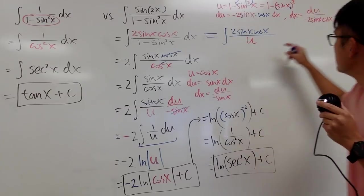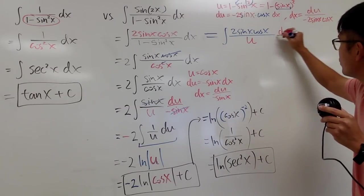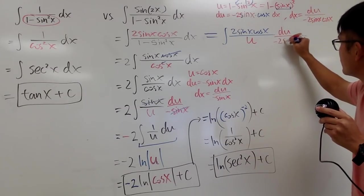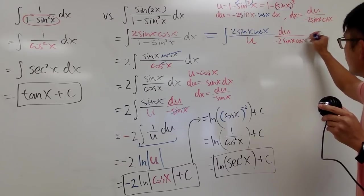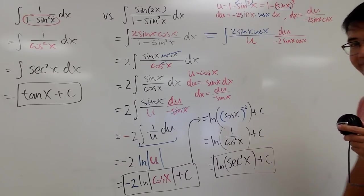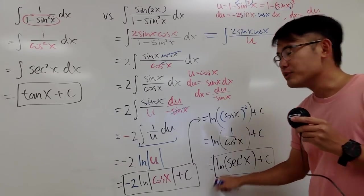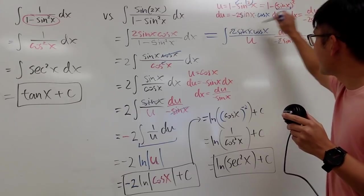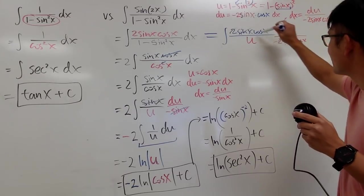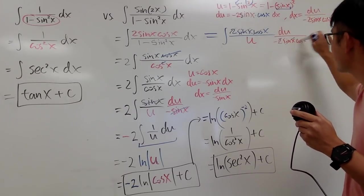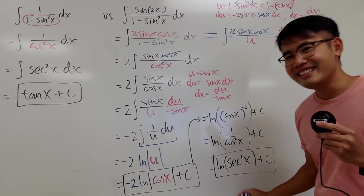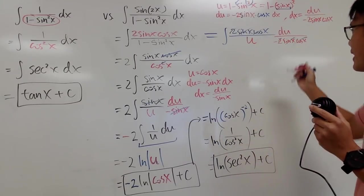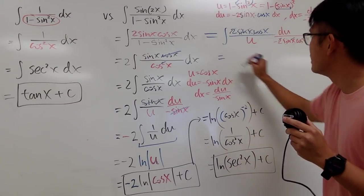The dx is du over negative 2 sine x cosine x. And you see: 2 cancels, sine x cancels, cosine x cancels — this is completely in the u-world. That's very nice.